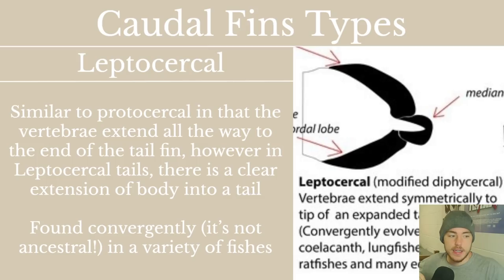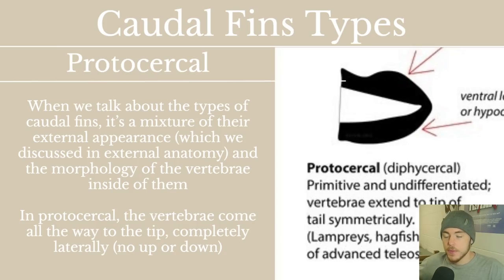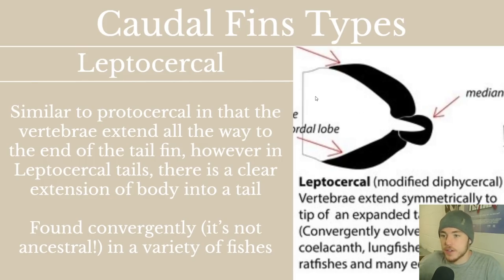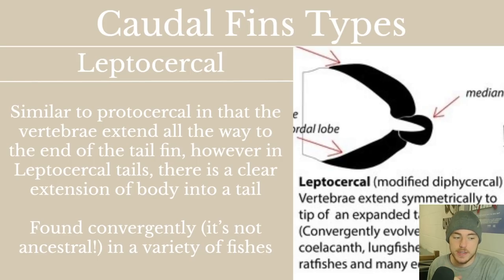Then you have leptocercal, which is similar to protocercal in that the vertebra extends all the way to the end of the tail fin. However, in leptocercal there is a clear extension of the body into a tail. In protocercal the body kind of just comes out into a point, whereas in leptocercal the body clearly ends and then there's a separate extension for the tail. It's found convergently in a variety of fishes — meaning it is not an ancestral trait but evolved independently in different lineages. Coelacanths, lungfishes, ratfishes (the holocephali), and many eel-like fishes have this as well.